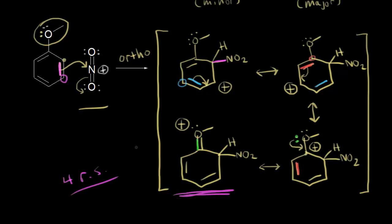The more resonance structures you can draw, the more the positive charge is delocalized, and the more stable your sigma complex is. The more stable your sigma complex, the more likely it is to form in your mechanism for electrophilic aromatic substitution. Because we can draw four resonance structures for an ortho attack, that is a favored, stable sigma complex that forms much more easily. The last step in the mechanism is to deprotonate the sigma complex to reform the aromatic ring.